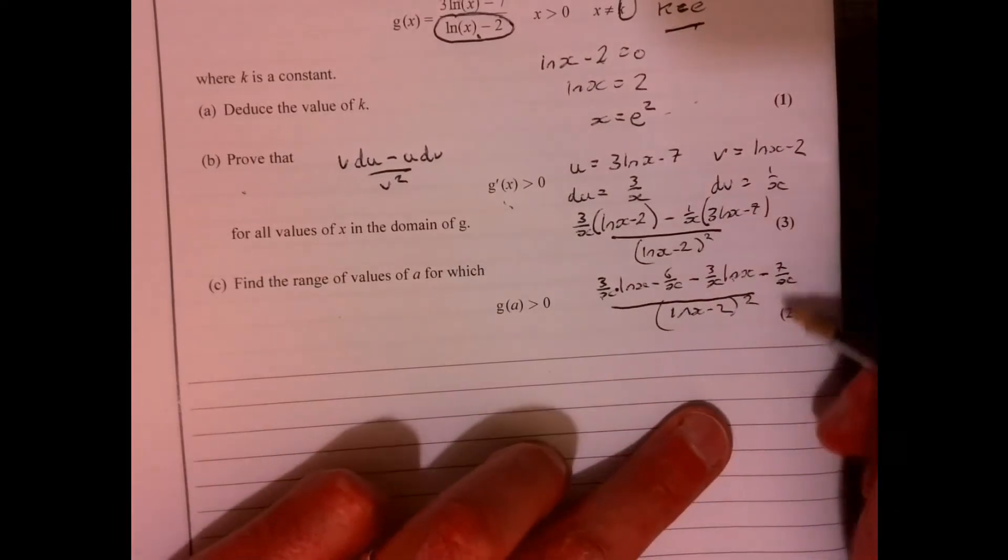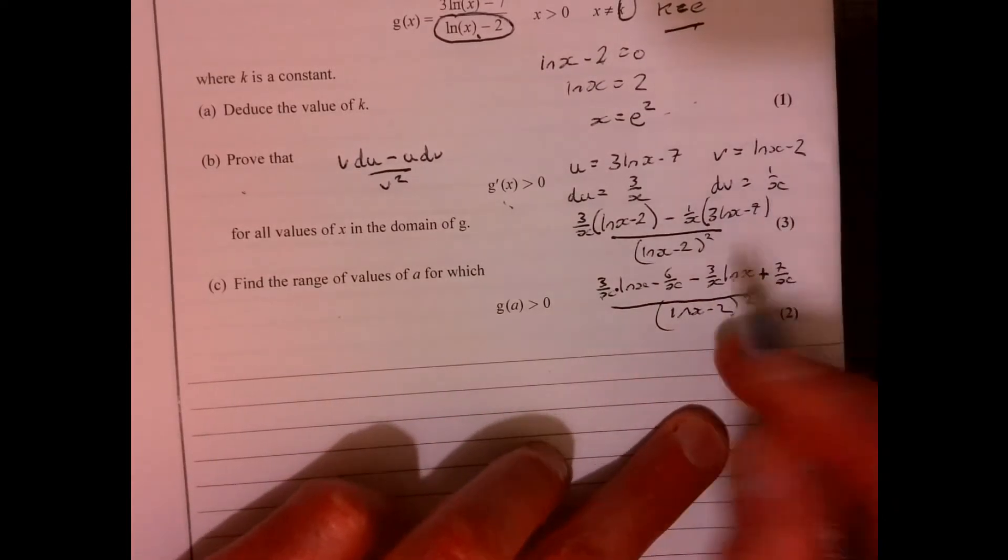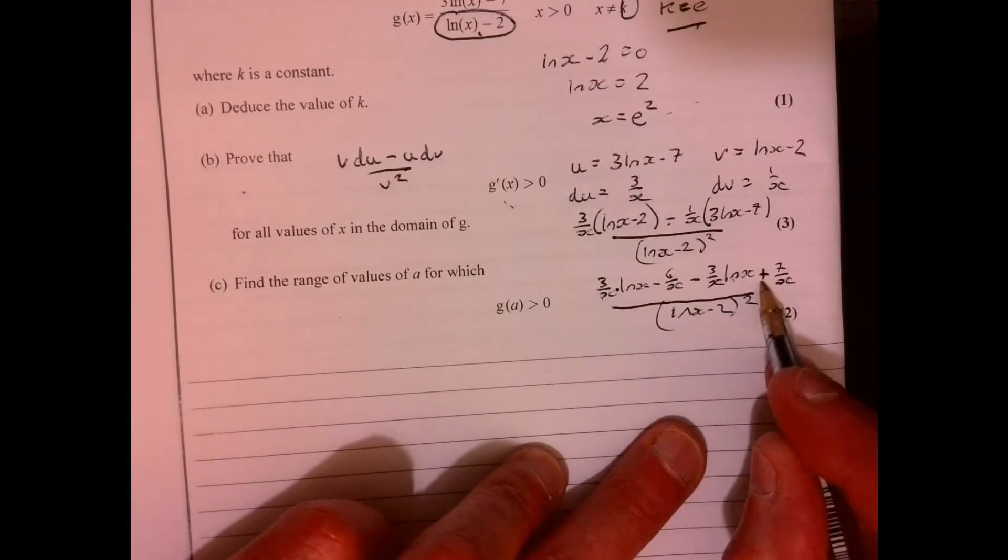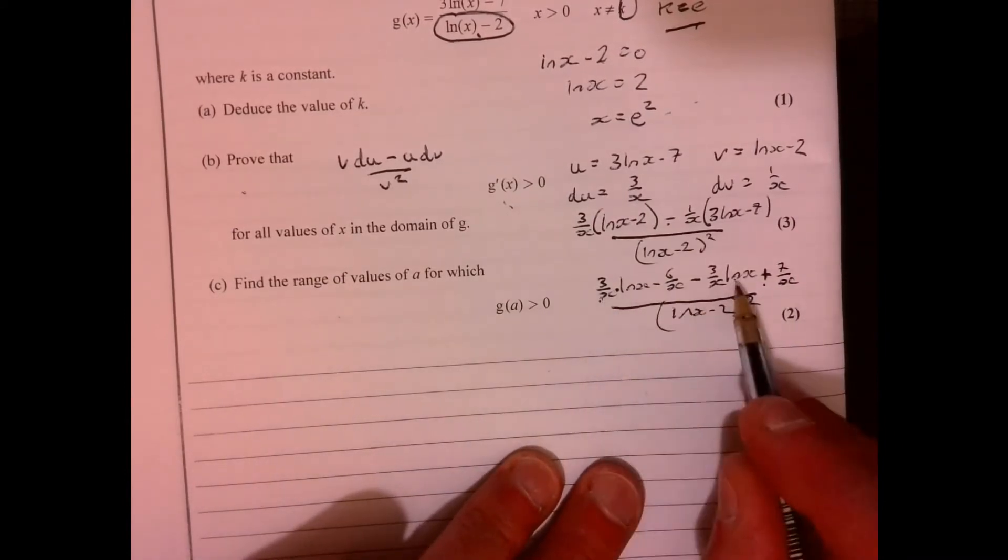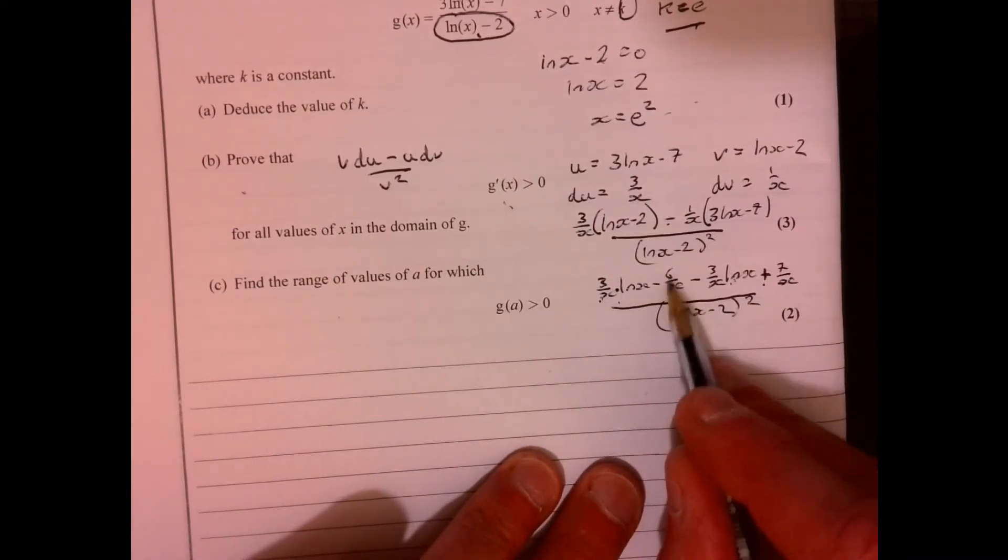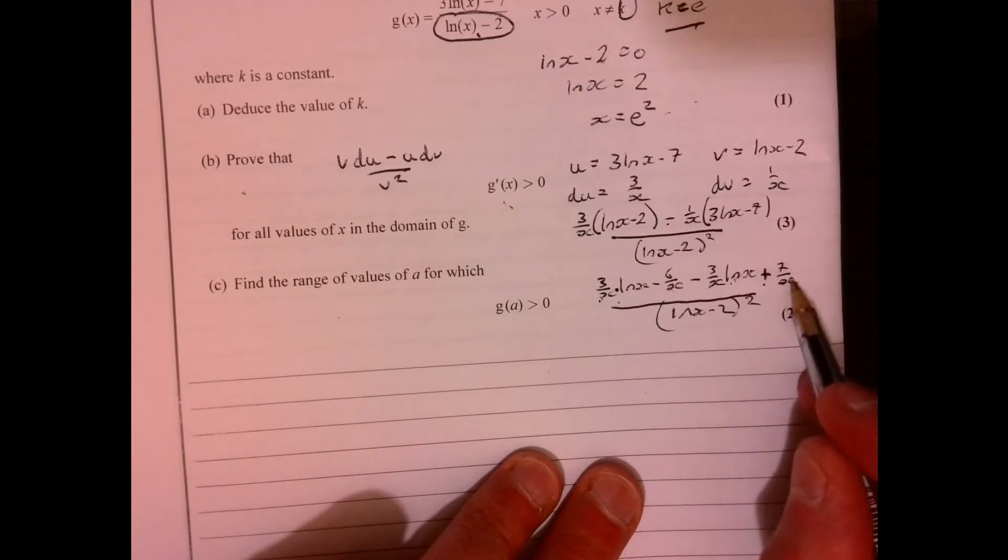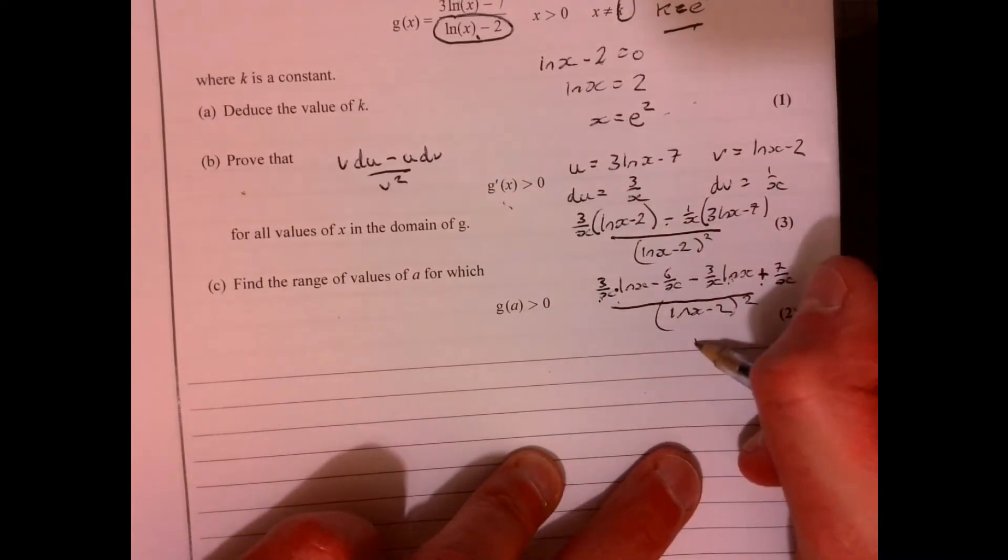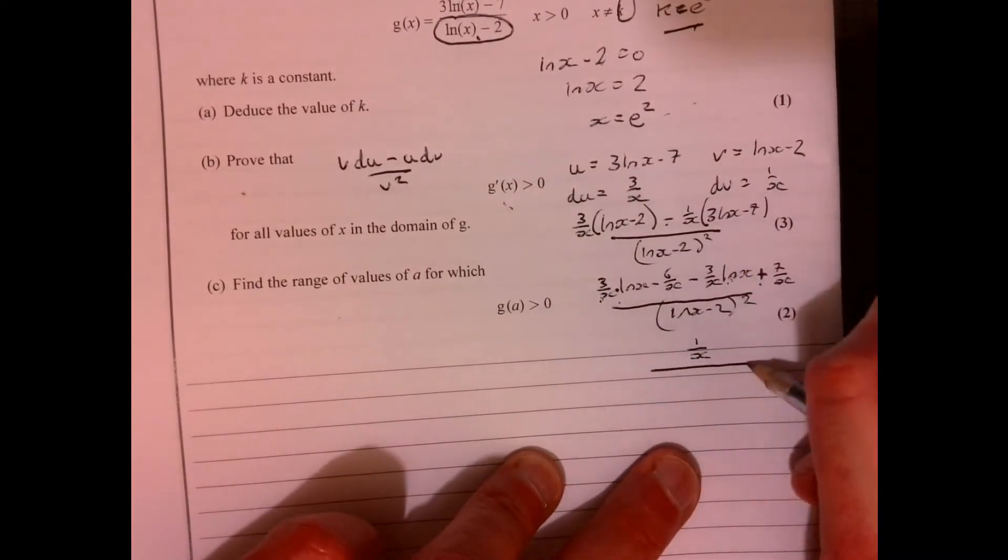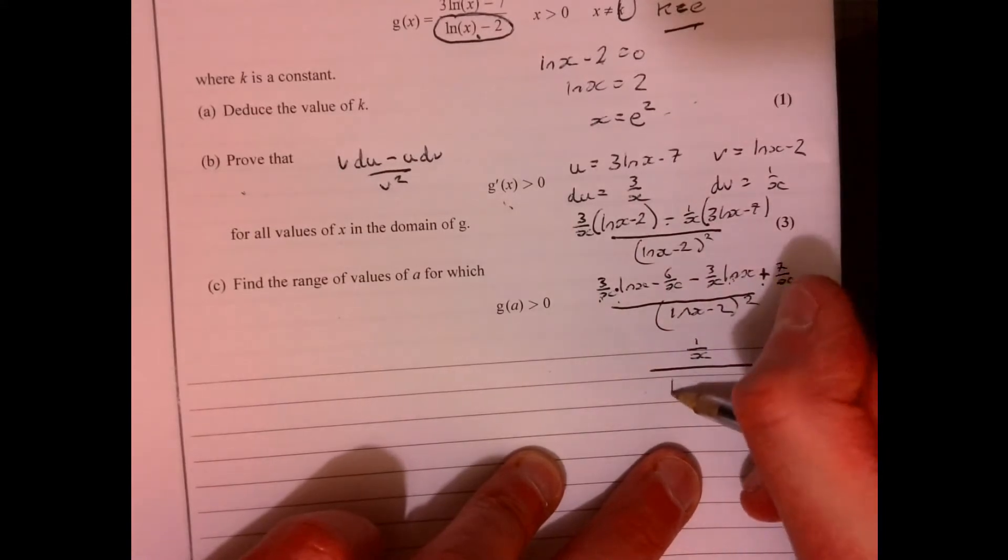And then I've got, oh whoops, there's a plus there. Oh, I made a mistake there. It's going to be a plus. So these two are going to cancel. I've got minus 6 over x plus 7 over x. That's 1 over x. So you can have 1 over x, and we're dividing that by ln x minus 2 squared.